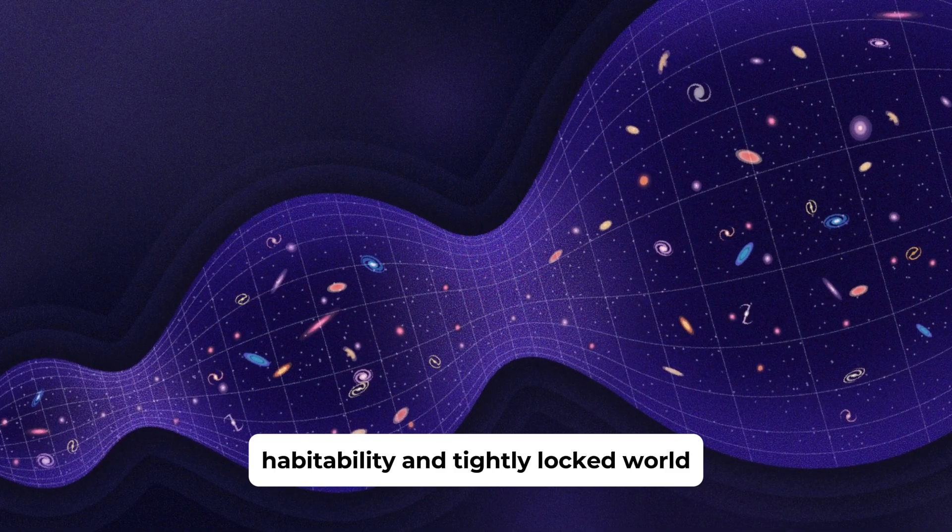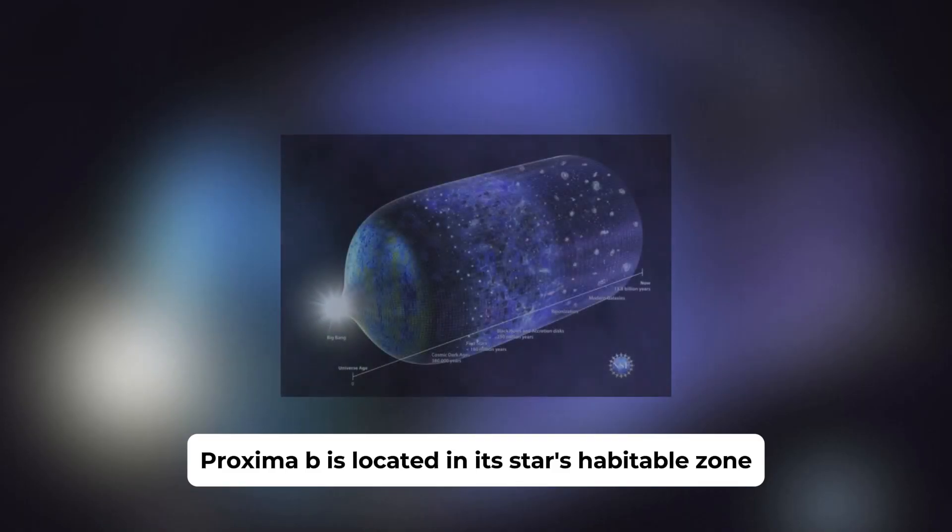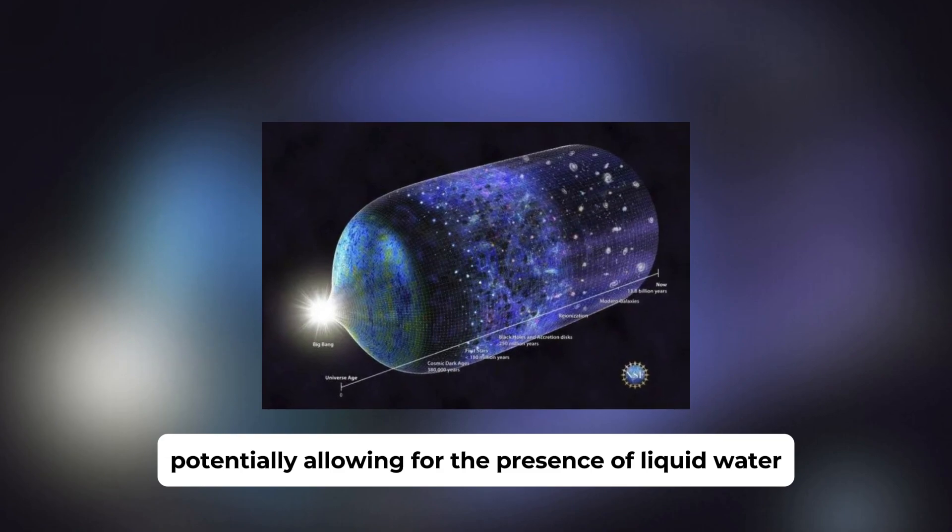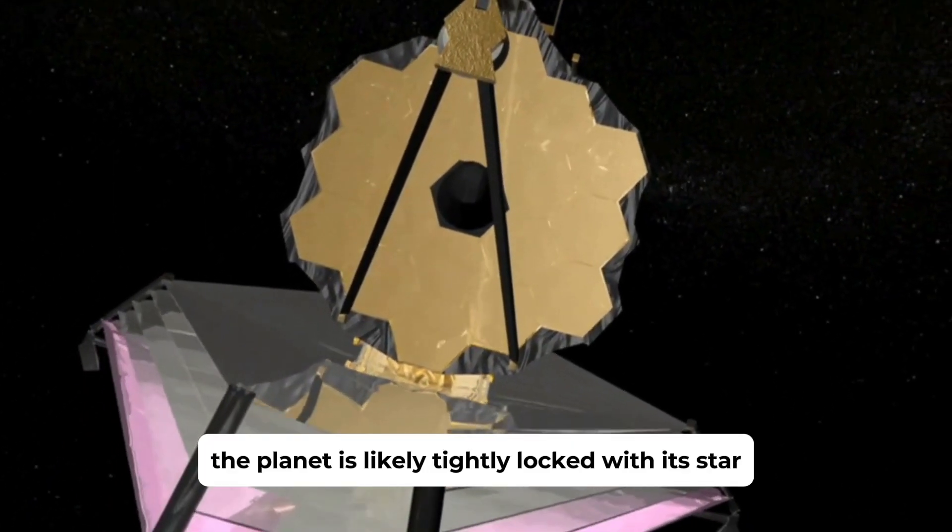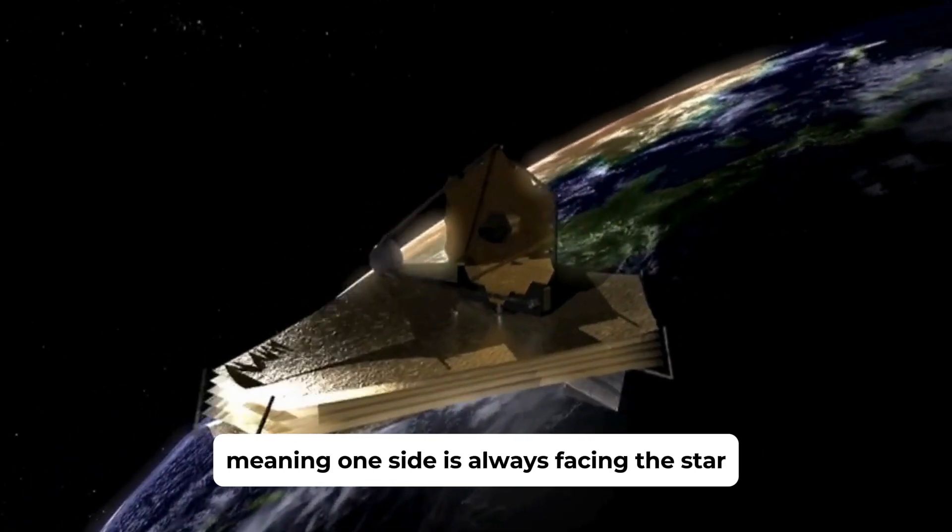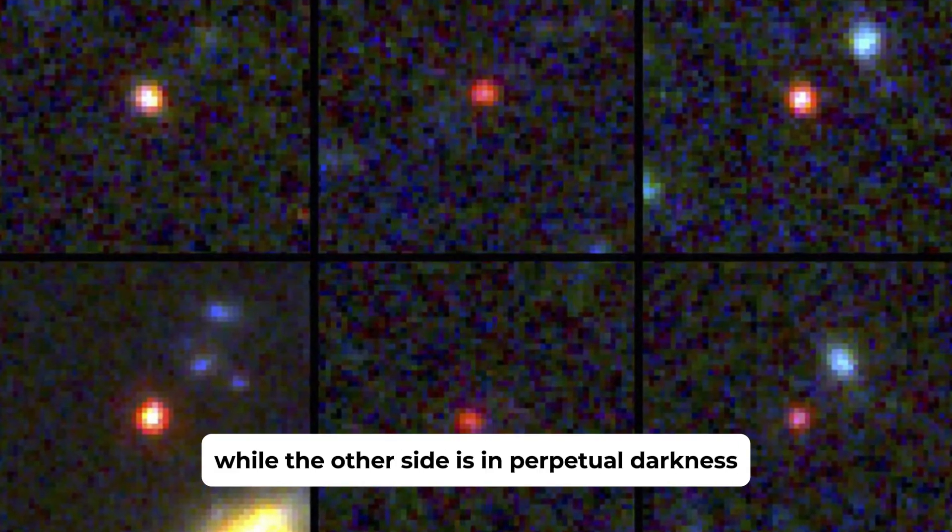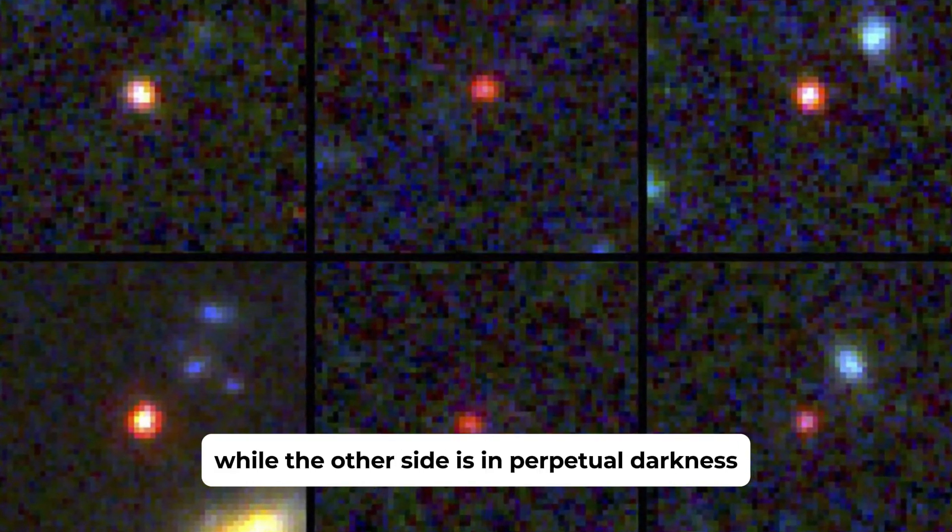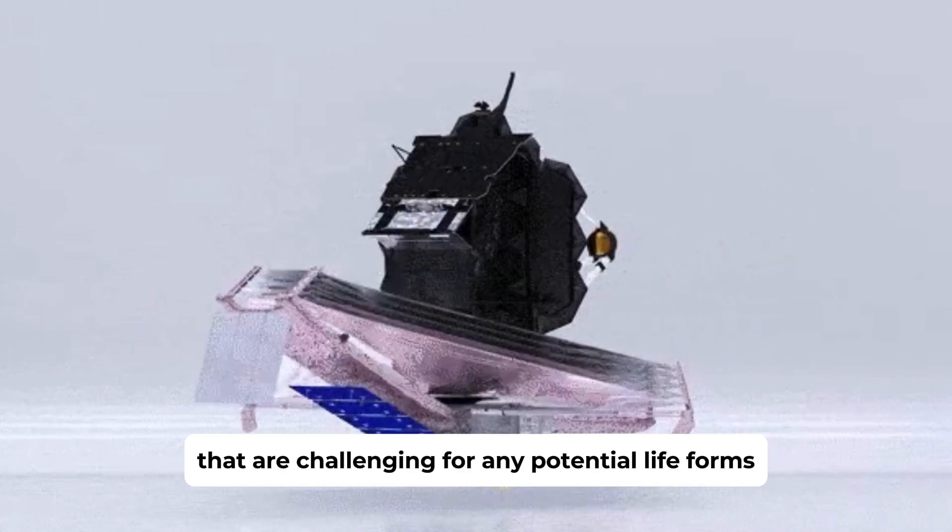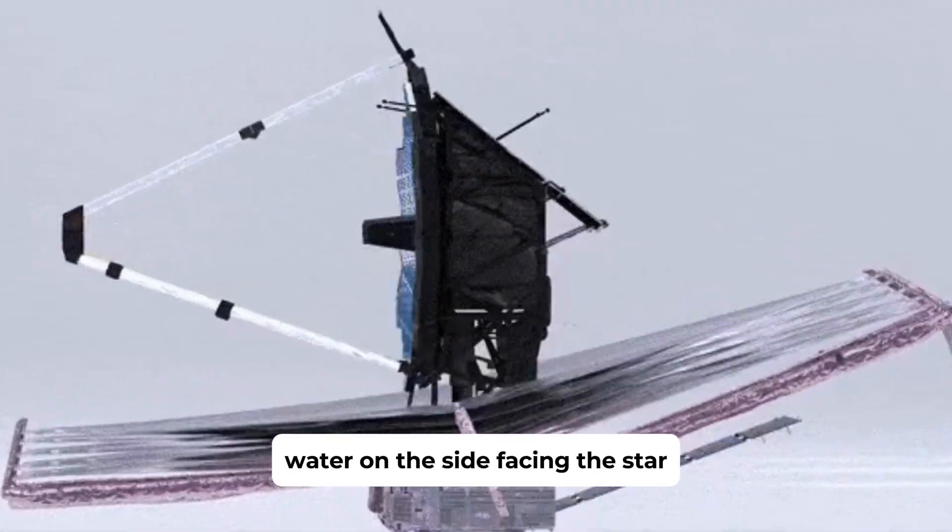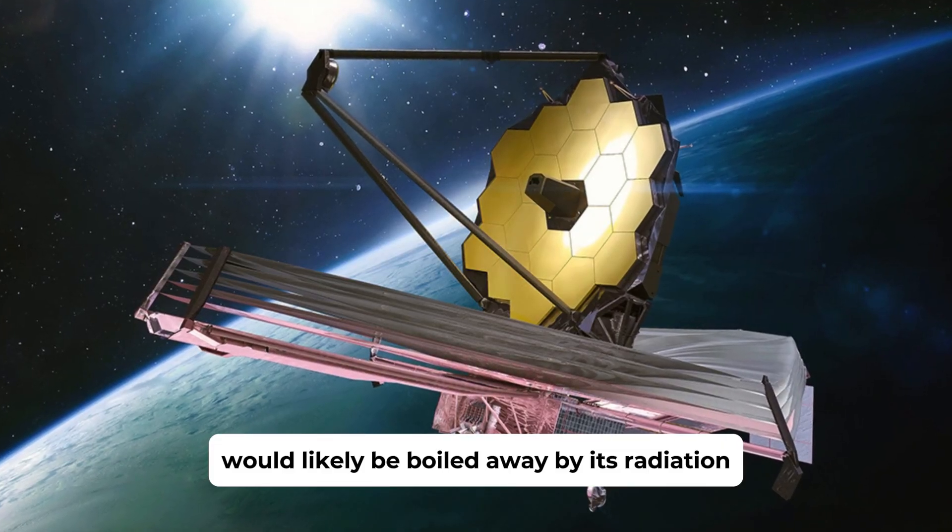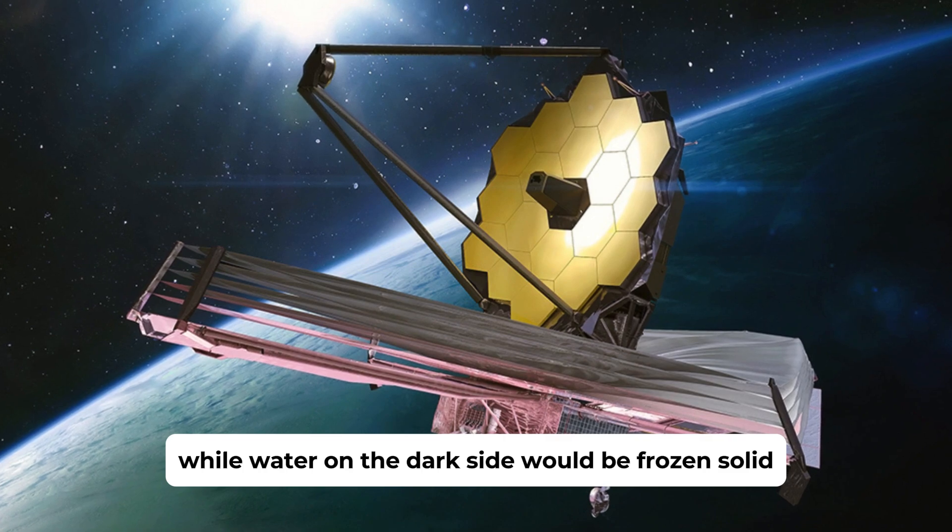Habitability and tidally locked world. Proxima b is located in its star's habitable zone, potentially allowing for the presence of liquid water. However, the planet is likely tidally locked with its star, meaning one side is always facing the star while the other side is in perpetual darkness. This creates extreme environmental conditions that are challenging for any potential life forms. Water on the side facing the star would likely be boiled away by its radiation, while water on the dark side would be frozen solid.